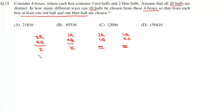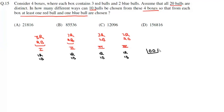So from each box, we are choosing at least 1 red and 1 blue — that gives us 8 balls fixed (1 red and 1 blue from each of the 4 boxes). We are left with 2 more balls to draw.